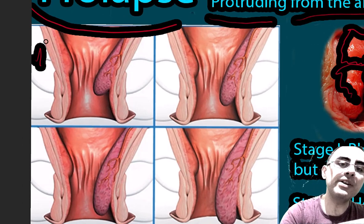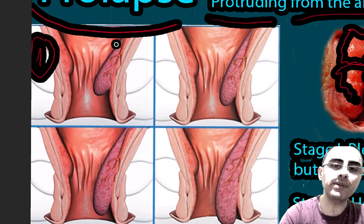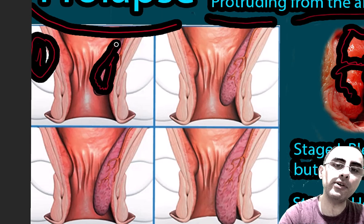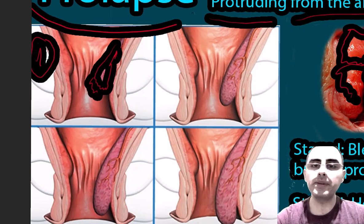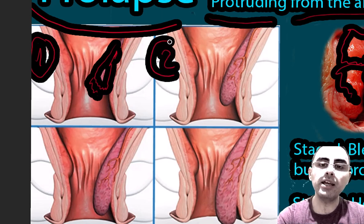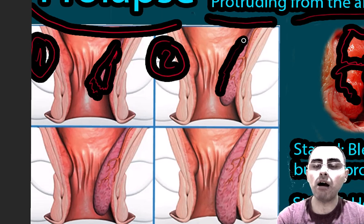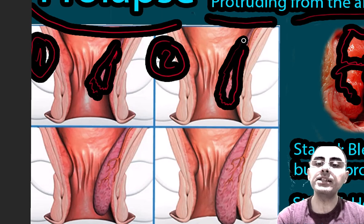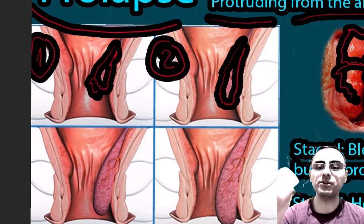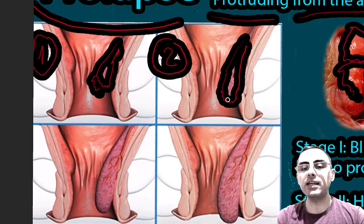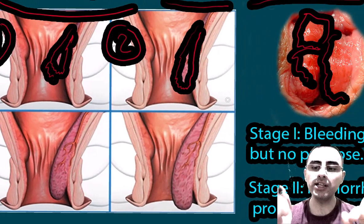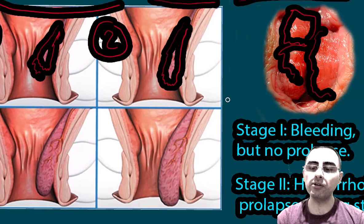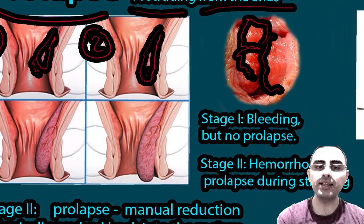The first stage is when there is bleeding but no prolapse — the hemorrhoid remains inside the rectum and does not move. The second stage involves bleeding and temporary movement outside during straining only; it retracts automatically without any intervention needed.